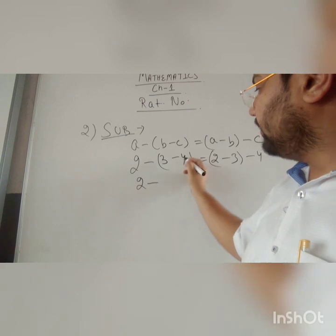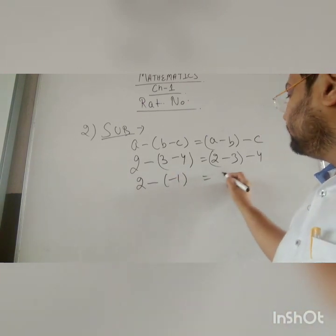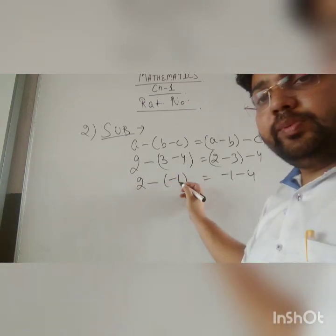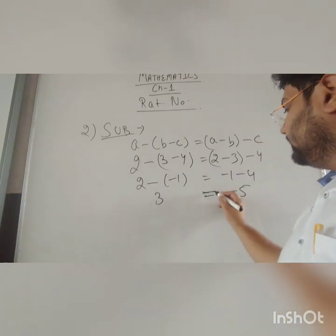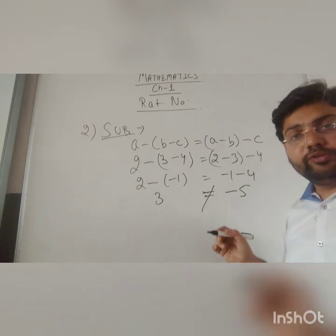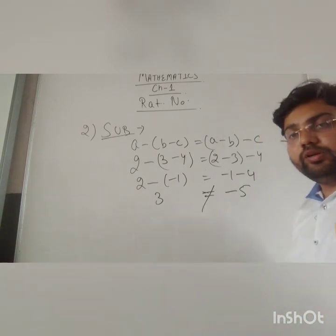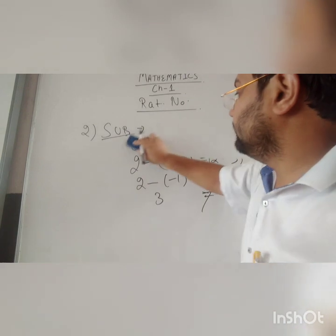This is 2 minus negative 1 should be equal to negative 1 minus 4. Minus minus plus, 2 plus 1 is 3, and this is negative 5, and these are not equal. So associativity is not true for subtraction of whole numbers.